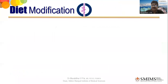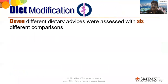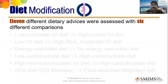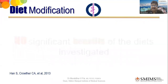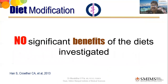The six comparisons included: low-to-moderate glycemic index diet versus high mixed glycemic index diet; low glycemic index versus high fiber; energy-restricted versus no energy restriction; low carbohydrate versus high carbohydrate; high monounsaturated fat versus high carbohydrate; and ADA diet versus high carbohydrate ADA diet. The conclusion was: no significant benefits of any of the diets investigated.